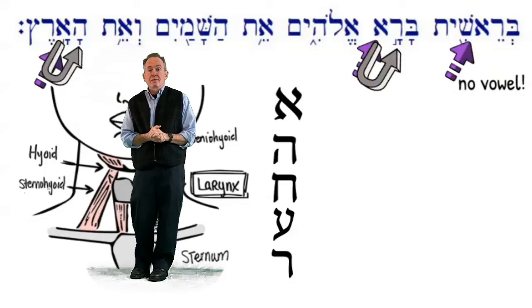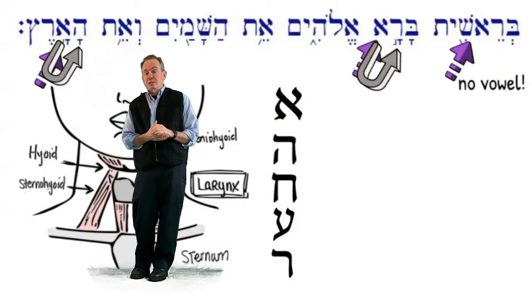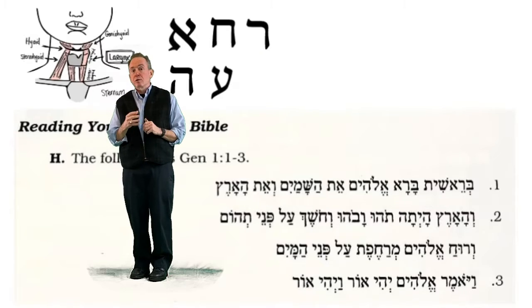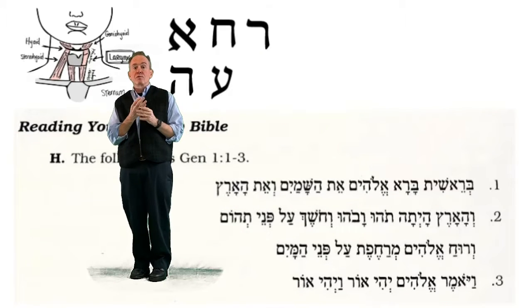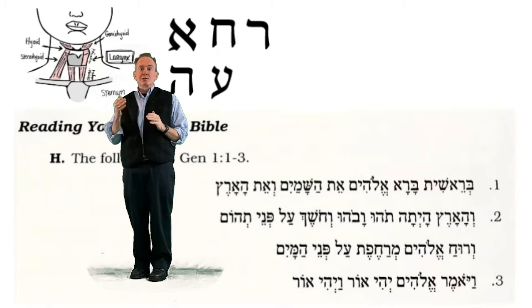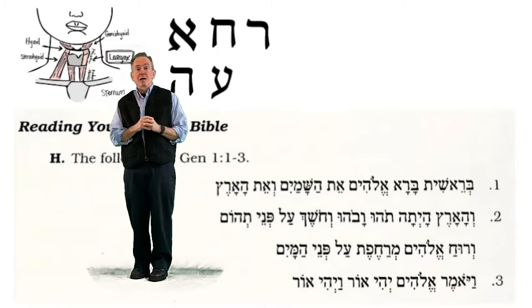Okay, let's look at the final assignment of our exercise section H. We're going to put a box around any words that we find that do not have one of these four gutturals or the letter reish. And indeed, as you look through, you see how common words with guttural letters are. There are really only two instances of words that do not have a guttural letter or a reish.